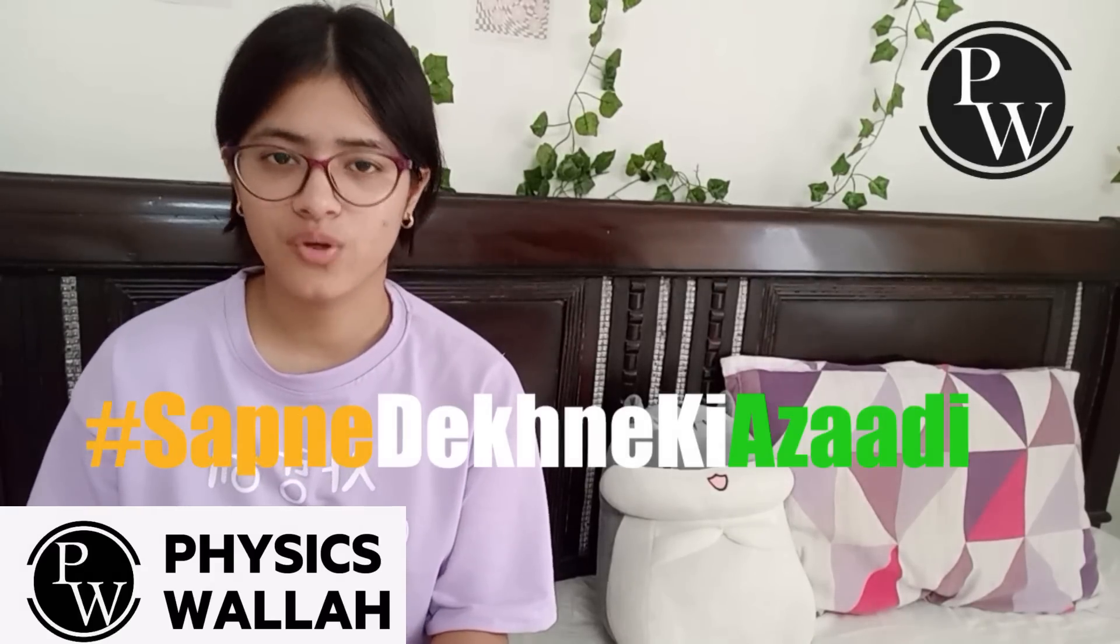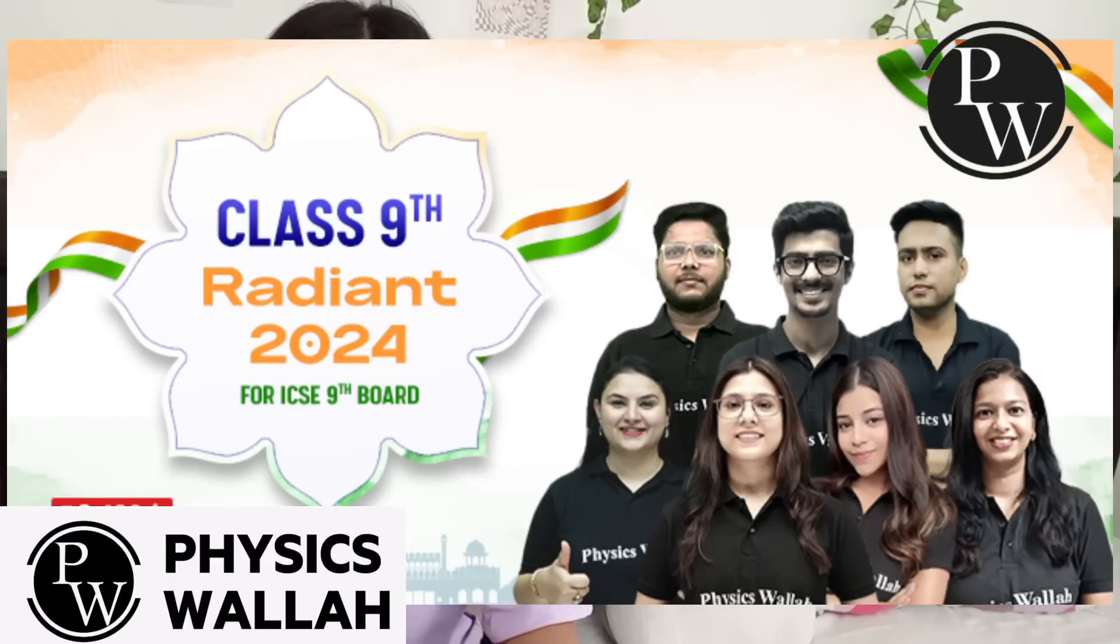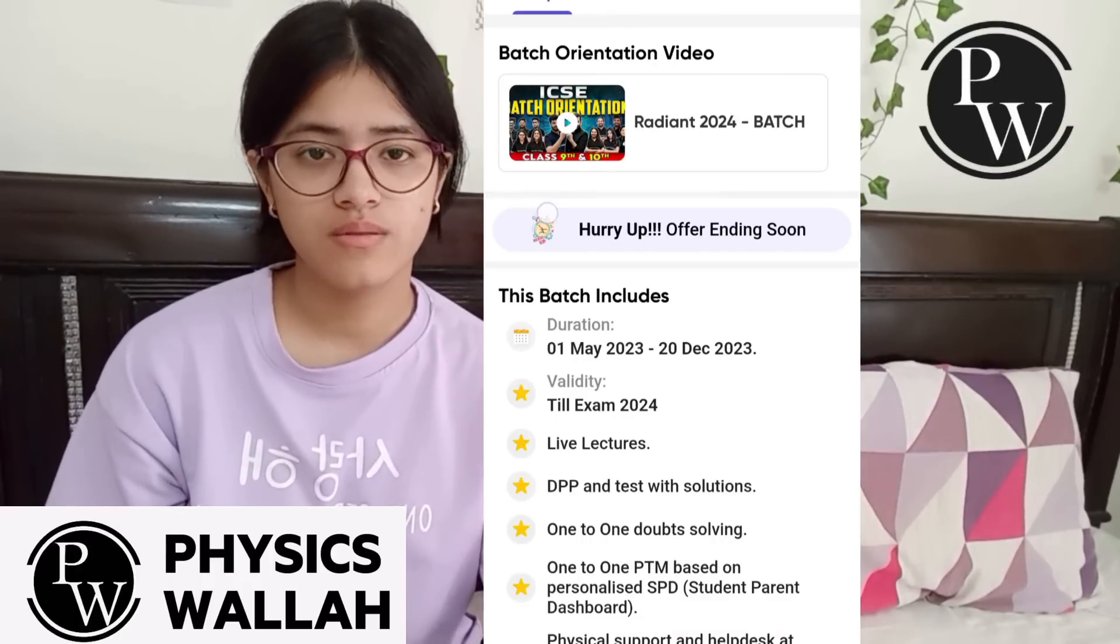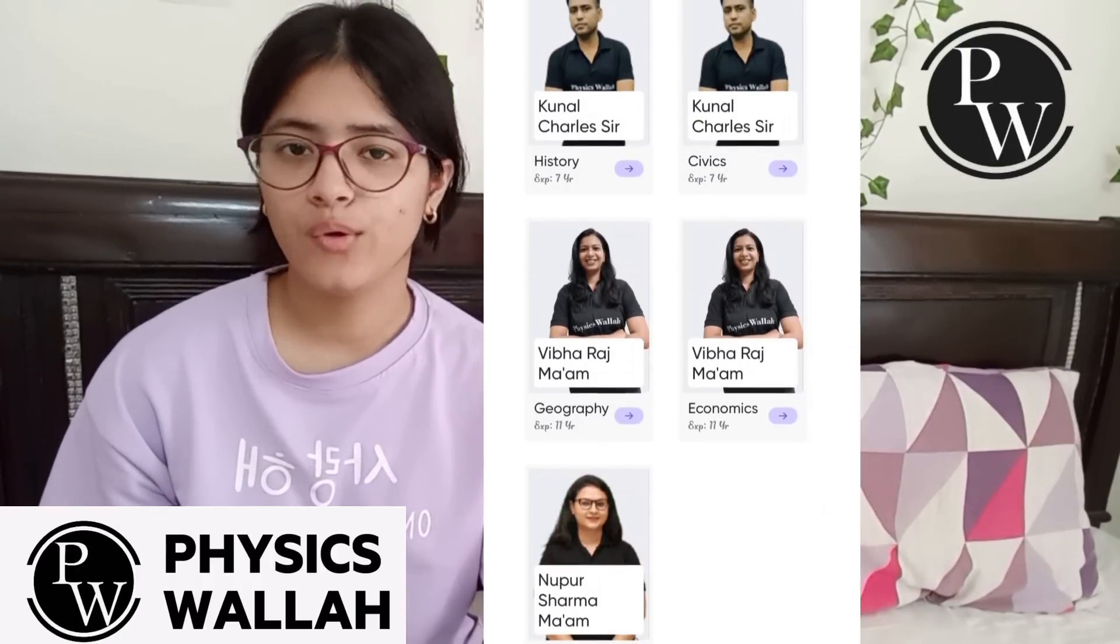If you want to pay attention, you will get a discount on all of the physics batches. So make your career better. PW has a Radiant Batch for Class 9 ICSE Boats, in which you will get Complete 9 Foundation, ICSE Boat and Olympiad Batch.